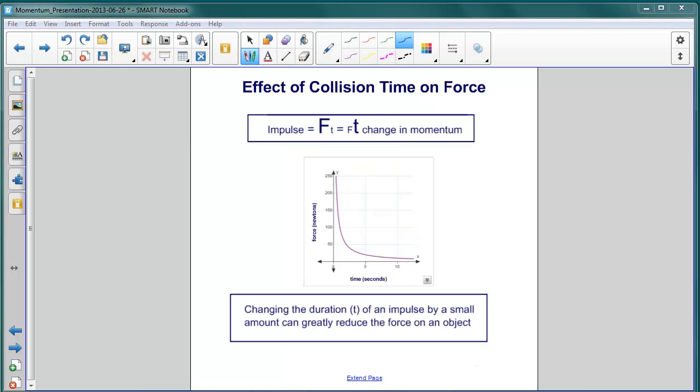Let's now consider the implications of impulse being force times time. Now, clearly, an impulse applied will achieve a certain change in momentum. But how you get there does make a difference. I can achieve the same impulse by applying a very large force over a very small amount of time, or I can get it by applying a small force over a long period of time. Either way, I achieve the same change in momentum, but the effect on the object whose momentum is being changed is quite different.